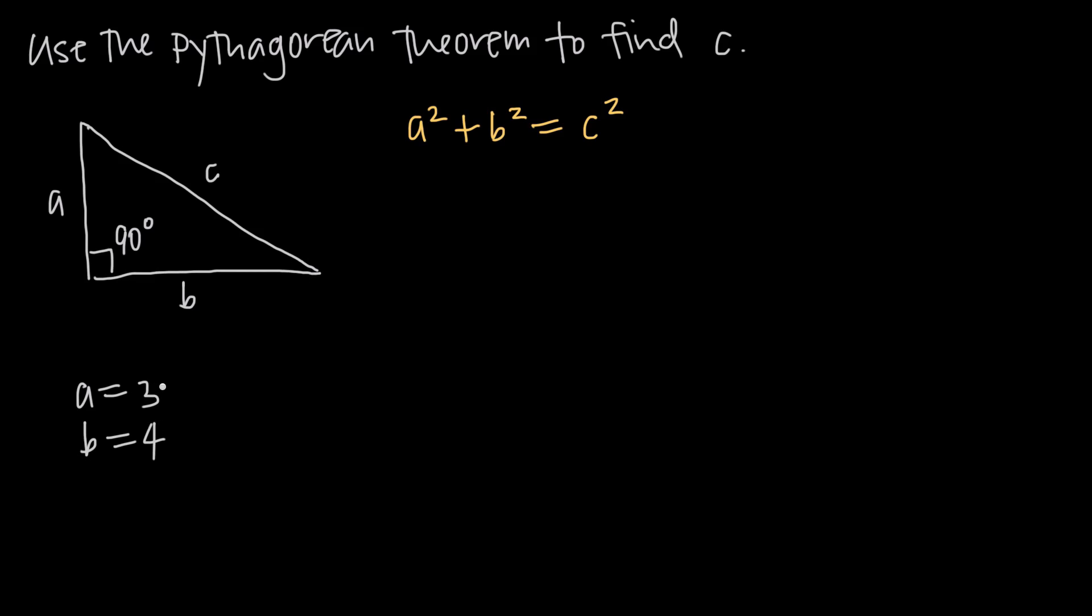All we do is plug in our values of a and b to the Pythagorean theorem. What we're going to get is 3 squared plus 4 squared equals c squared. We'll apply our exponents: 3 squared is 9, 4 squared is 16, equals c squared. 9 plus 16 is 25, equal to c squared.